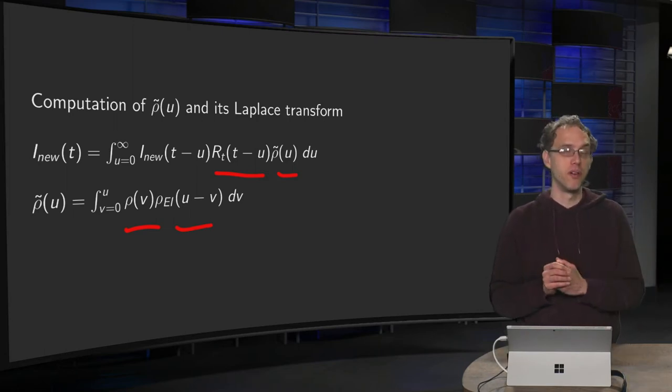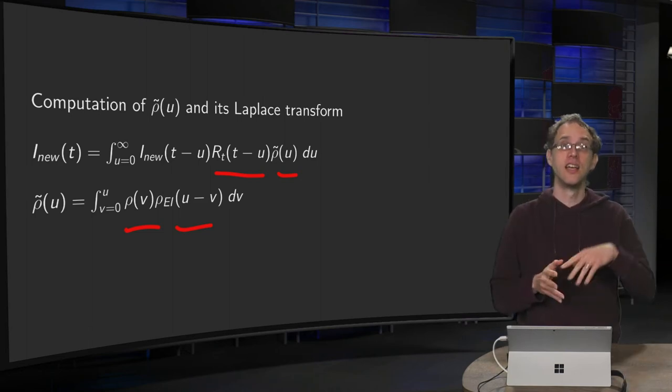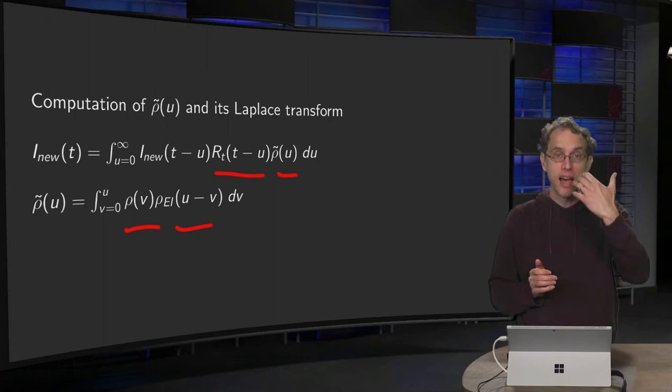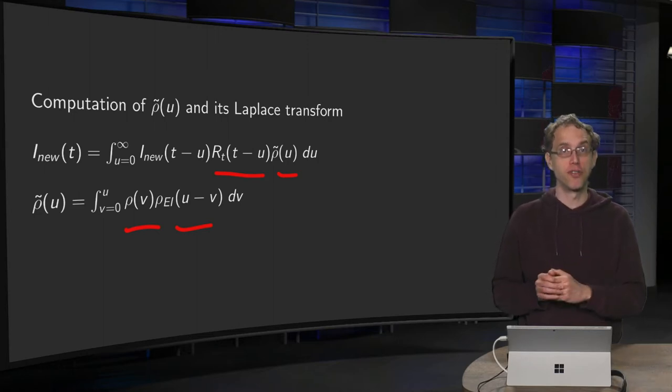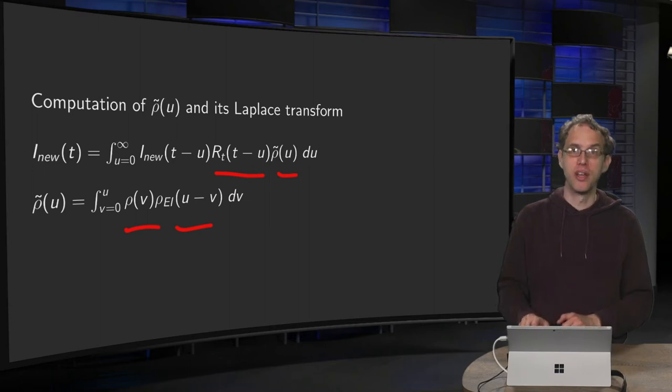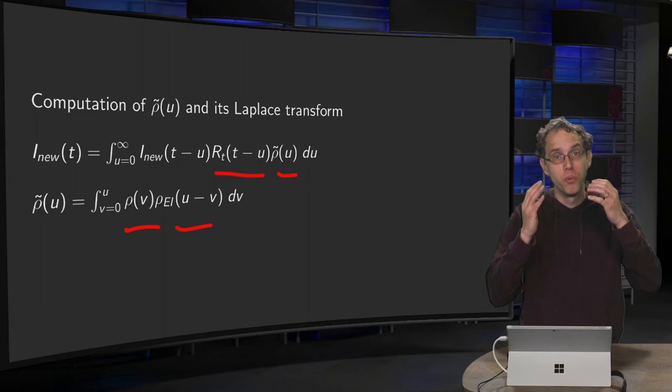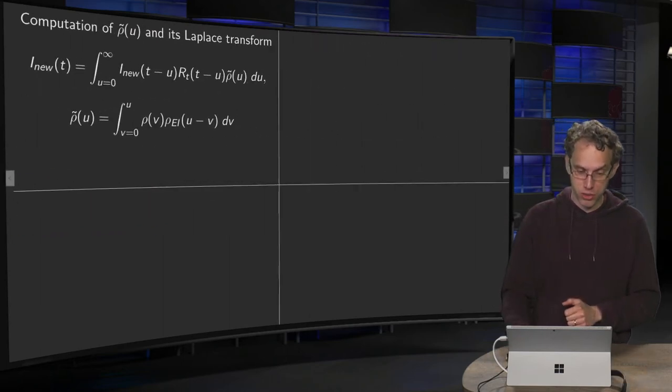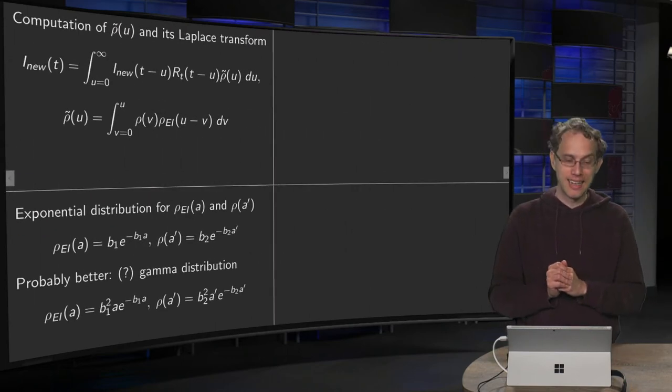So first we have to make some choice for those densities, and then we can compute our convolution, and then we can compute finally the Laplace transform, because we need that one later on. So let's put some ansatz, some information, what distributions are we going to use.